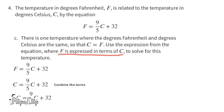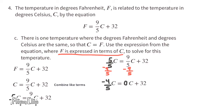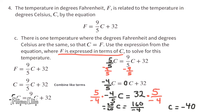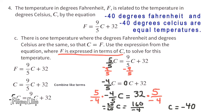Let's collect like terms. The C on the left is 1C, which is equivalent to five-fifths C. Now let's subtract nine-fifths from both sides. On the left side we're left with negative four-fifths C, and on the right side we have 32. To make this a positive 1C, we multiply both sides by the reciprocal of negative four-fifths, which is negative five-fourths. I've discovered that C equals negative 40. But remember, in this case C equals F, so F also equals negative 40. Negative 40 degrees Fahrenheit and negative 40 degrees Celsius are equal temperatures.